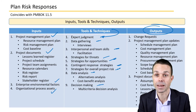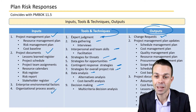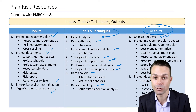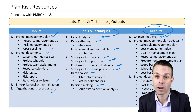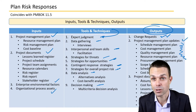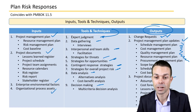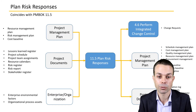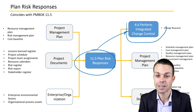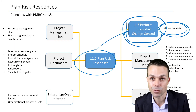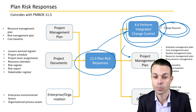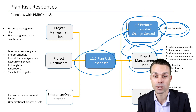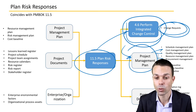Outputs from planning risk responses include change requests — if we need to make a change to a baselined document as a result of a risk or a mitigation. Project management plan updates may also be needed, as well as project documents updates where we might need to update things like costs, assumptions, or the project schedule.